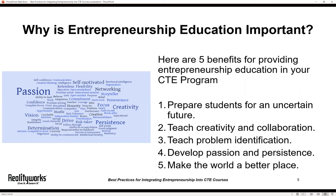Number four: develop passion and persistence. Passion and sustained persistence applied toward long-term achievement can be defined as grit. The demanding and uncertain journey for entrepreneurs requires more passion and sustained persistence than most other activities. Number five: simply making the world a better place. Entrepreneurs seek to solve problems, meet needs, and ease pain points with their products and services. By participating in entrepreneurship education, you can help your students become ready to change the world.